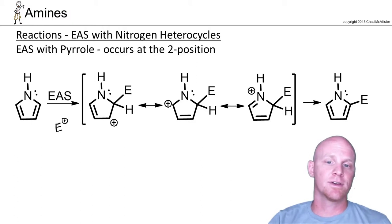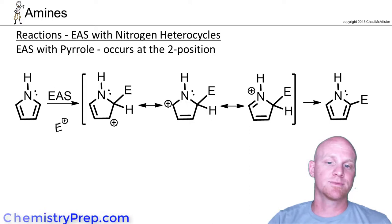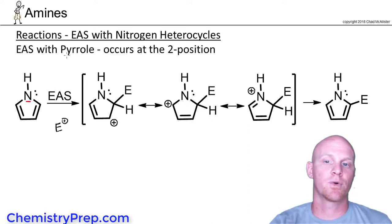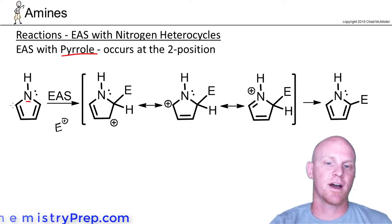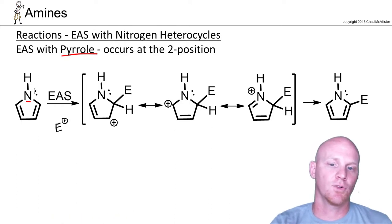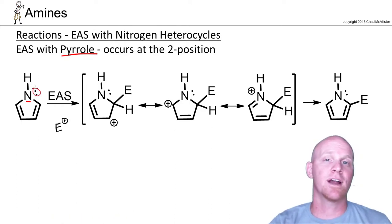A heterocycle is an aromatic ring where not all the atoms are carbon. Obviously, we're going to have one that's nitrogen. We'll start with pyrrole here. Pyrrole is a five-membered ring with nitrogen, and the lone pair of electrons is part of the aromatic system.